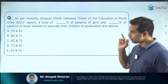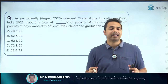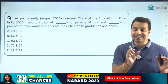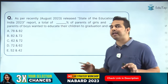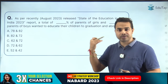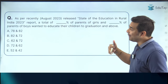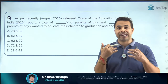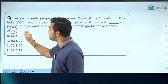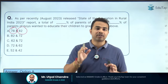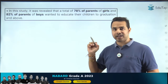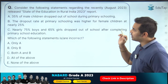Key findings: the report tells us what percentage of parents wanted their children to do graduation and above. For girls, 78% of parents want their daughters to complete graduation or above. For boys, 82% of parents want their sons to educate themselves to graduation and above.